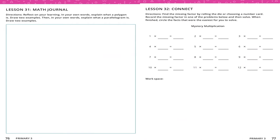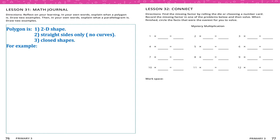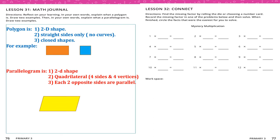Math journal: in your own words, explain a polygon. A polygon is a 2D shape with straight sides only — no curves — and closed. For example, rectangle and square are both polygons. A parallelogram is a 2D quadrilateral — four sides and four vertices — where each two opposite sides are parallel and equal.